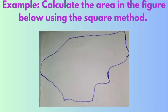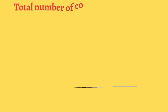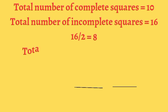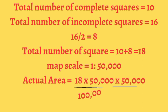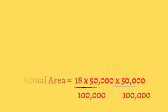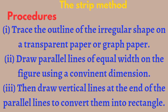We can find the area using the regular shape formula — multiplying length and breadth. For example: calculate the area of the figure below using the square method. We have an irregular shape, so we place it on a graph sheet and count complete squares and incomplete squares. Assuming the number of complete squares is 10 and incomplete squares is 16 — we divide the incomplete by 2 to get 8, then add to give 18 total. Relating to the scale and multiplying gives 4.5 square kilometres.